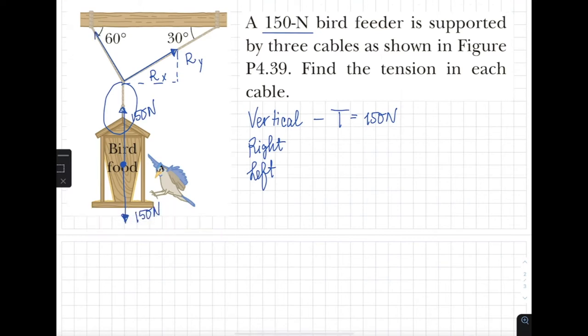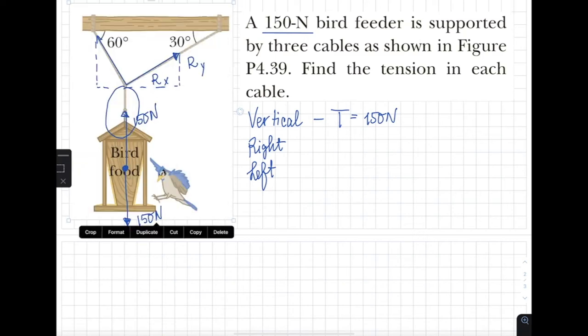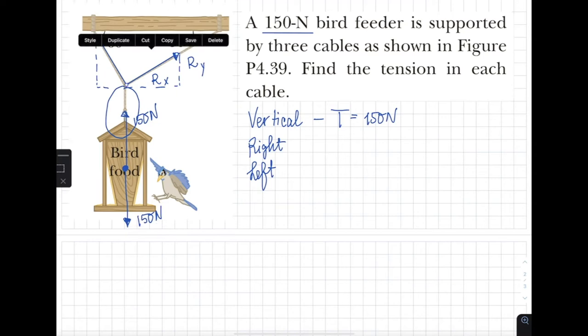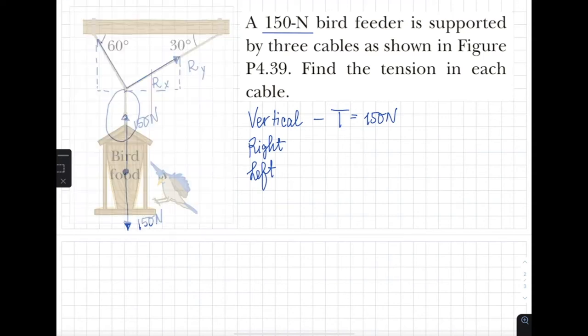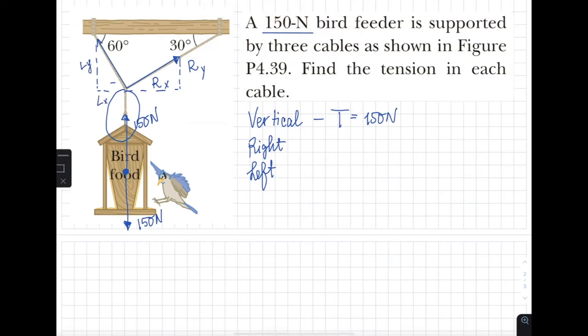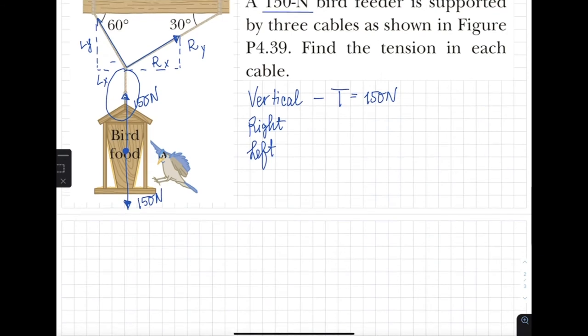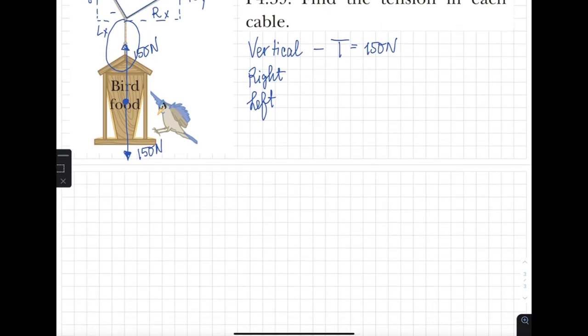So this is, I'm gonna say tension right. Why? Tension right X. Then this right here would be another tension and that would be tension left, and if we split it into X and Y components again, this will be left Y and left X. Now the thing about these forces, the vertical was very easy, the two at an angle will require a little bit of work.